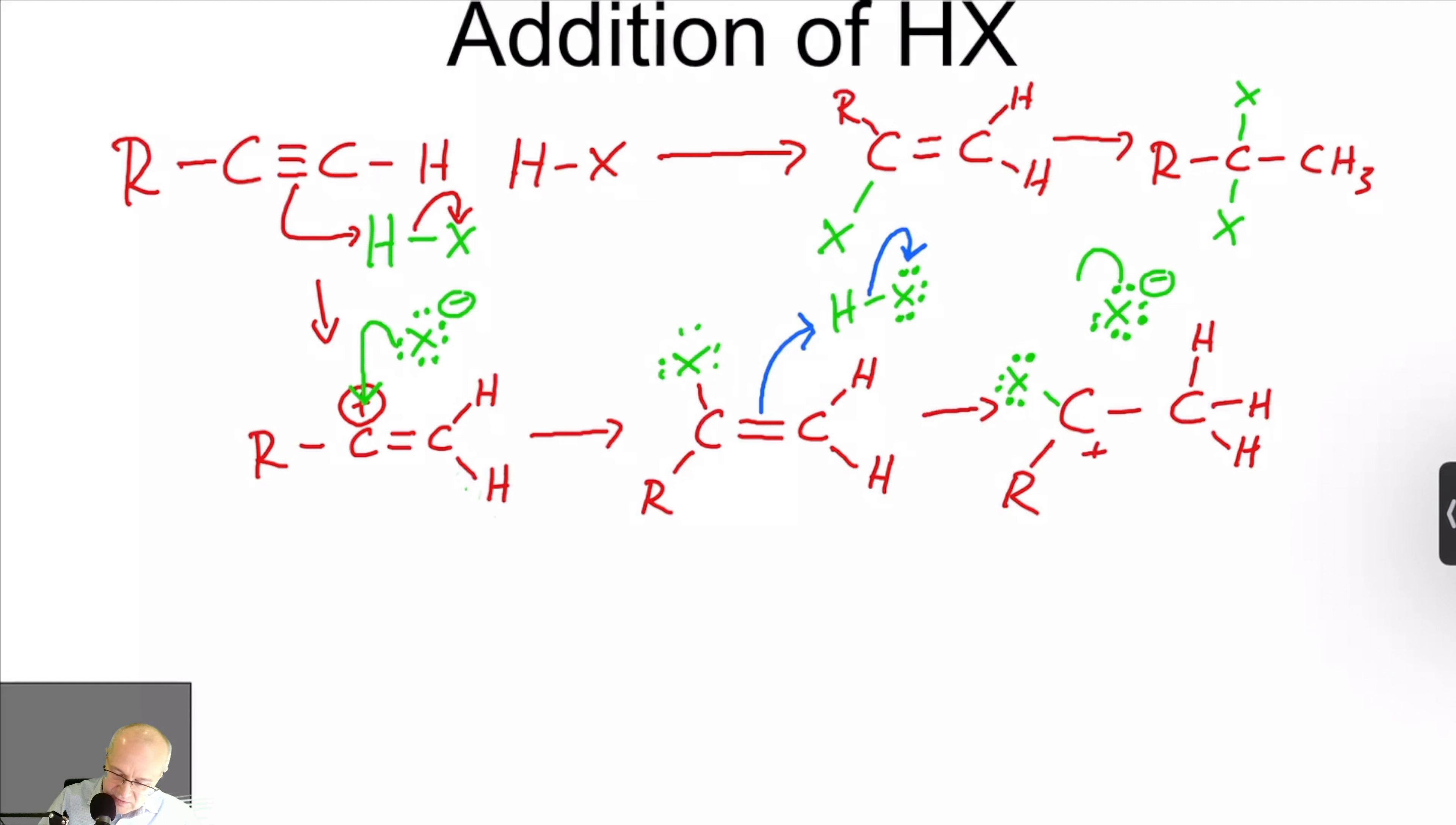Sorry, put the cation in. This is a cation. Cation in here. And now attack from the halogen. We'll go there. And then that will generate your product, which is right here.